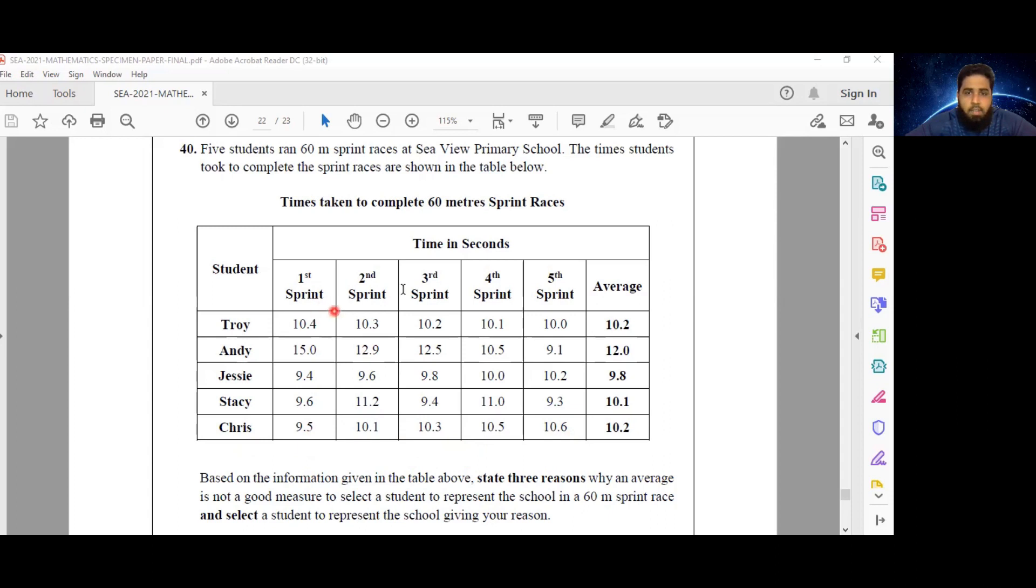Whereas Troy, his final sprint is 0.4 seconds shorter than his initial sprint. So although they have the same average,